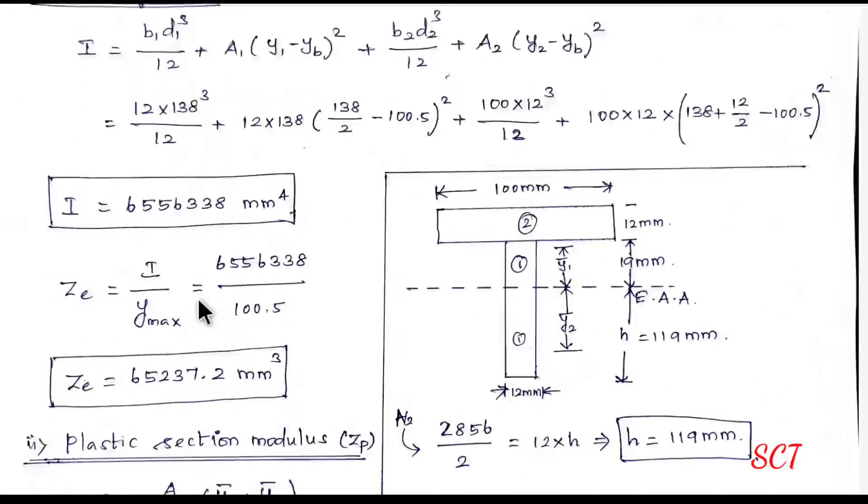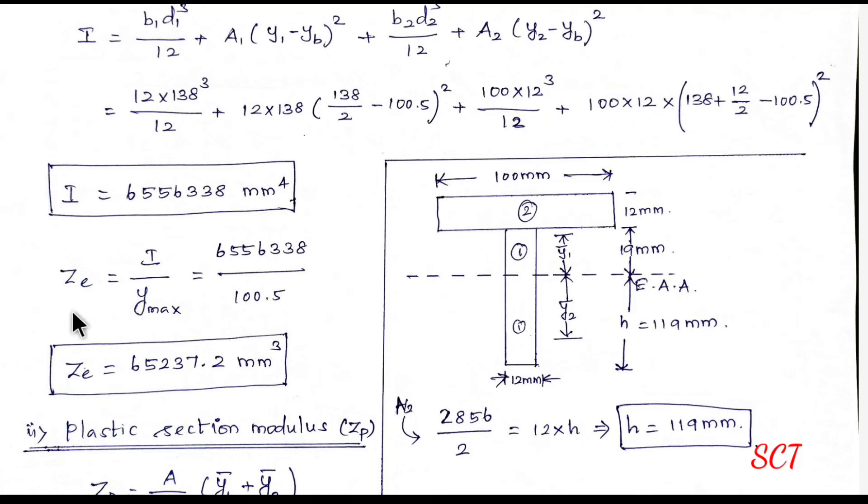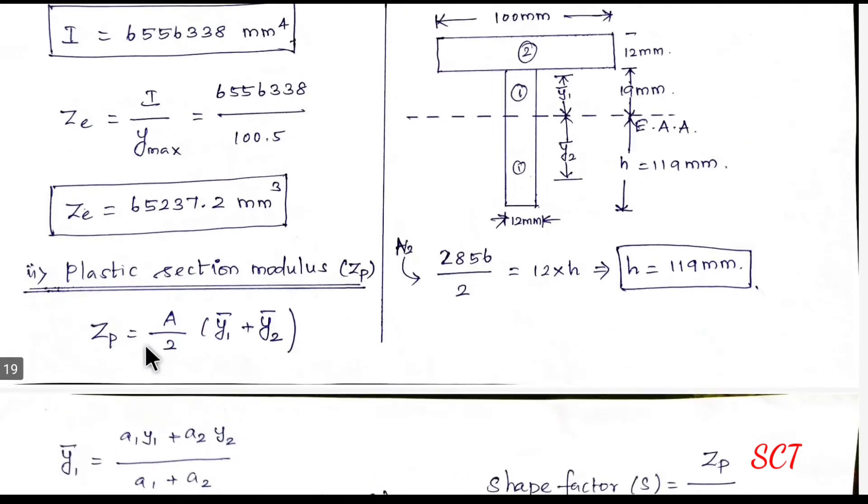Okay, so, now, we can calculate the elastic section modulus. Let's calculate Ze is equal to i by y max. I value, we can calculate y max, 100.5. So, we can solve the elastic section modulus as 65237.2 mm cube. So, next, elastic section, we can calculate the plastic section.